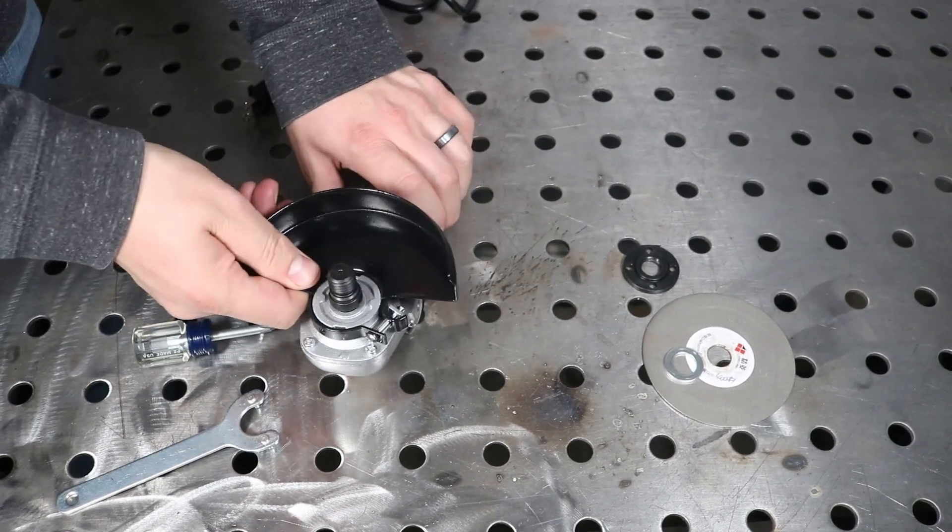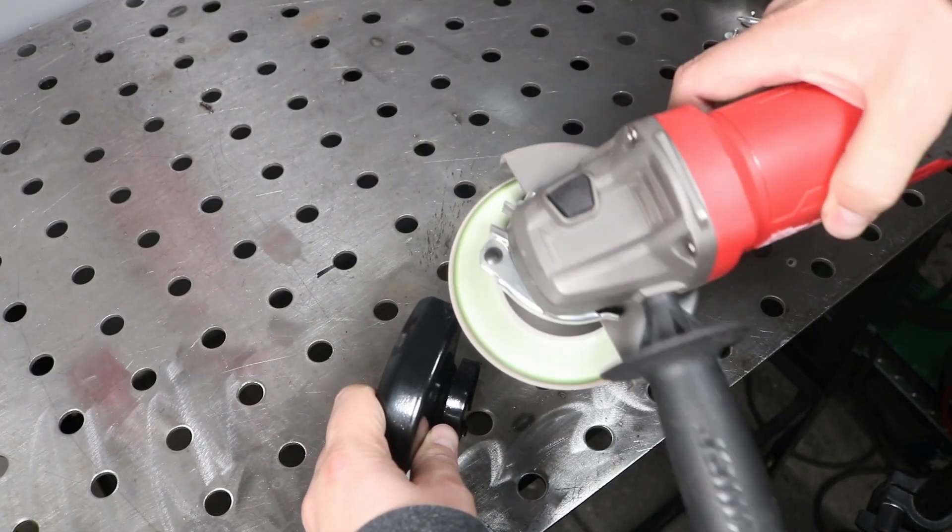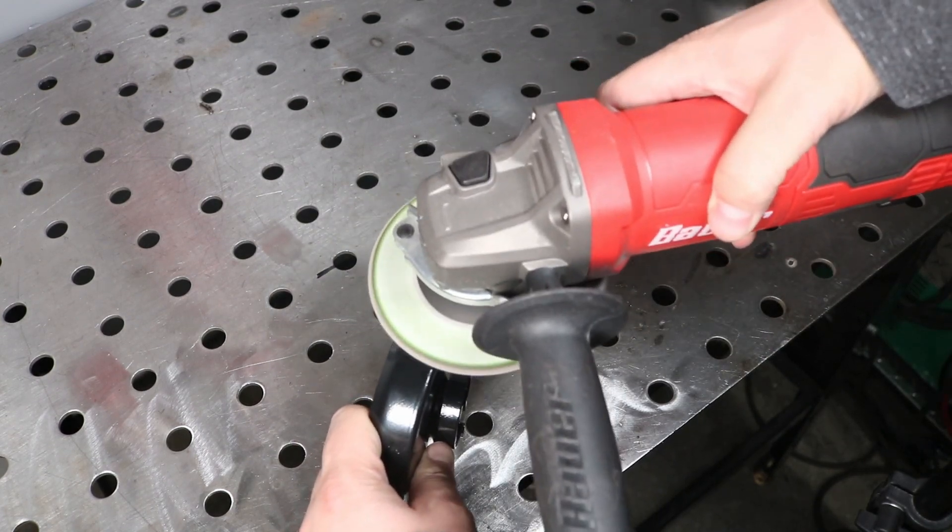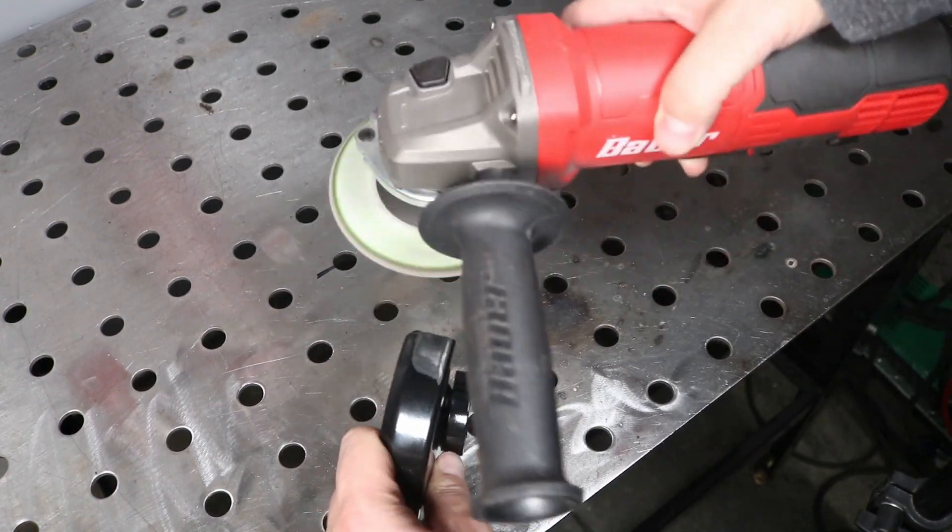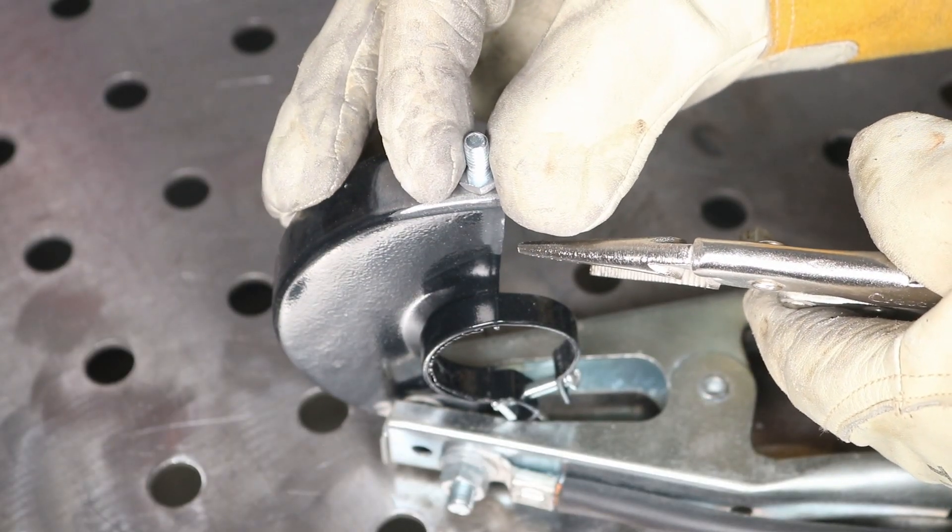So I'm going to go ahead and attach it with a single fastener to the shroud right here that I've removed. And I'll grind a little bit of paint off here and clamp on a screw.